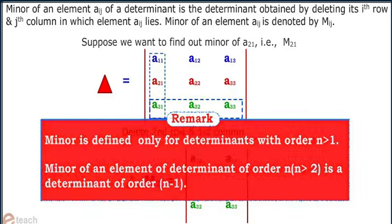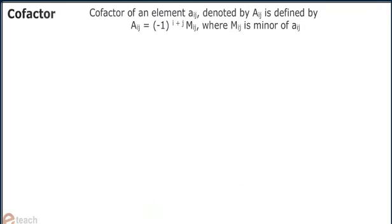Cofactor of an element aij denoted by Aij is defined by Aij equals minus 1 to the power i plus j into mij, where mij is the minor of aij. Now let us consider the determinant.